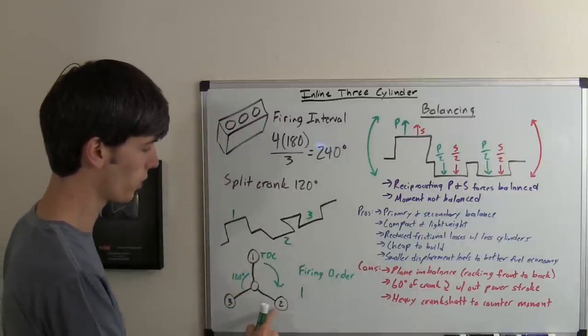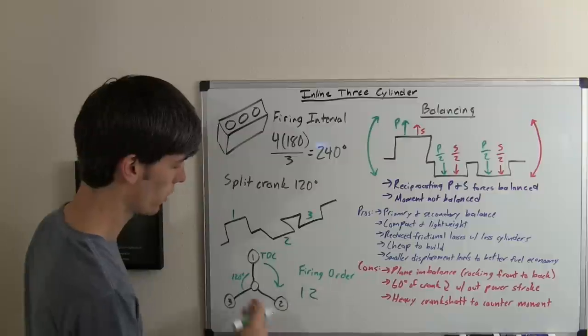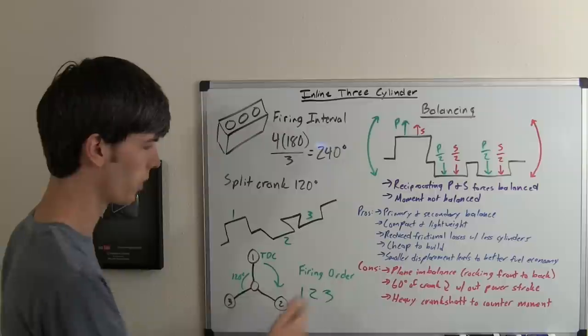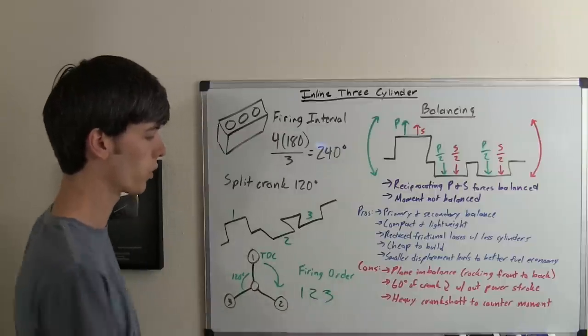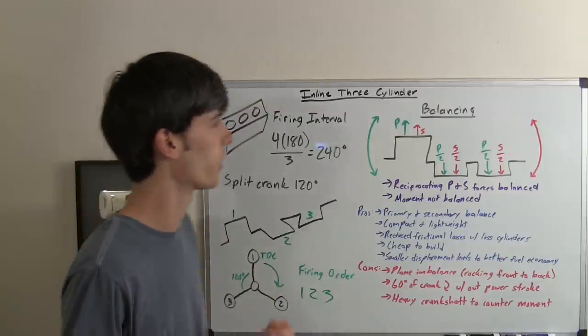So if we go 240 degrees, we get our firing interval goes one, and then two, and then another 240 degrees, and then we hit three. So very simple to remember firing order. You also could do a one, three, two, and change up some of the things with the design of the engine.